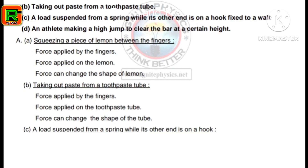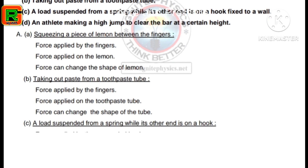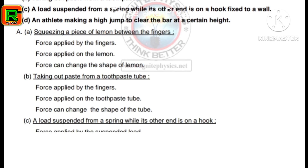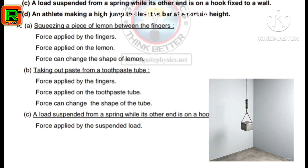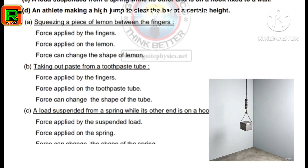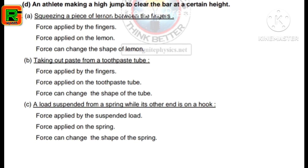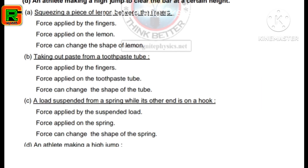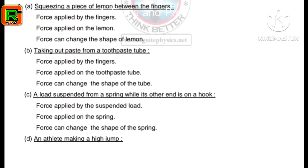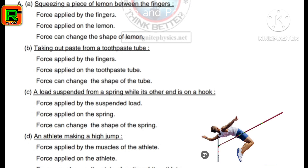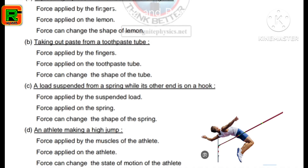C) A load suspended from a spring while its other end is on a hook fixed to a wall — force applied by the suspended load, force applied on the spring, and force can change the shape of the spring. D) An athlete making a high jump to clear the bar — force applied by the muscles of the athlete, force applied on the athlete, and force can change the state of motion of the athlete.